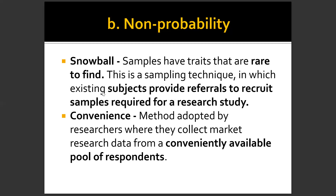Snowball sampling is used when samples have traits that are rare to find. It is a technique in which existing subjects provide referrals to recruit additional samples. For example, if we are looking for seafarers, the seafarer we interview would refer his or her friends to do the same survey, making it easier and faster to reach our goal or sample size. That is the snowball method.